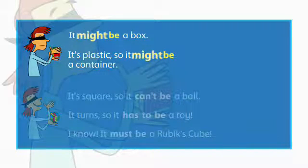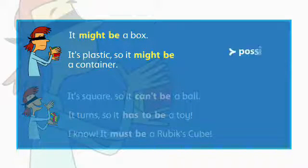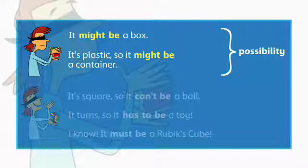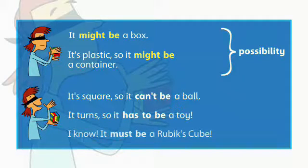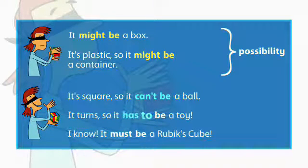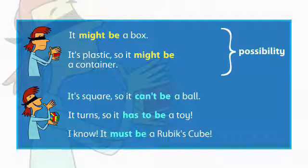We use 'might' to talk about possibility. We use 'can't', 'has to', and 'must' to talk about certainty.